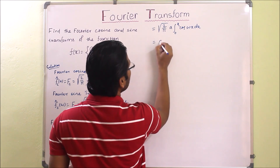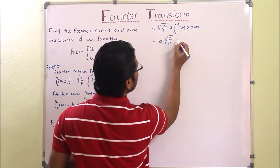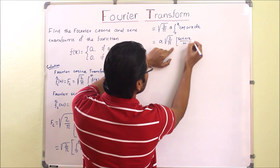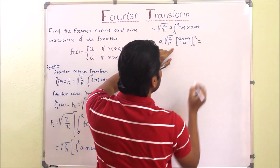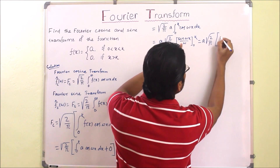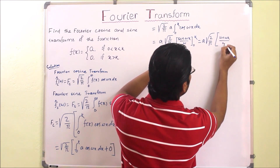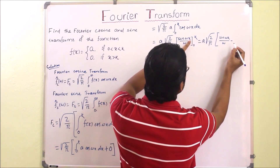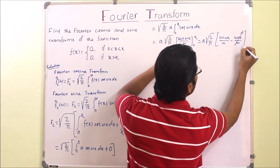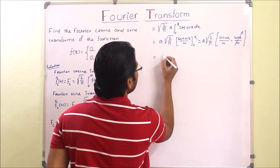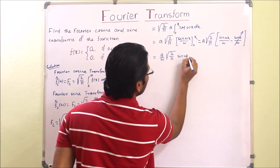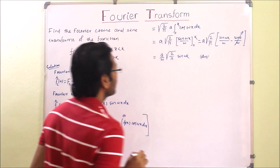This equals a times square root of 2 over pi. The integral of cos(wx) is sin(wx) over w, evaluated from 0 to k. Applying the limits gives a times square root of 2 over pi times sin(wk) over w minus sin(0) over w. Since sin(0) equals 0, the final answer for the Fourier cosine transform is (a/w) times square root of 2 over pi times sin(wk).